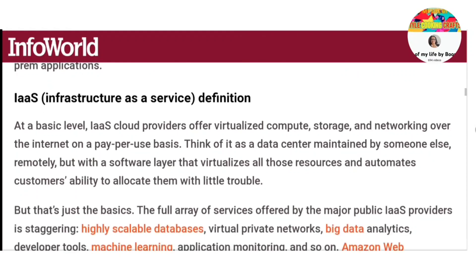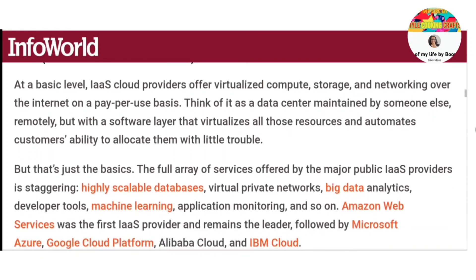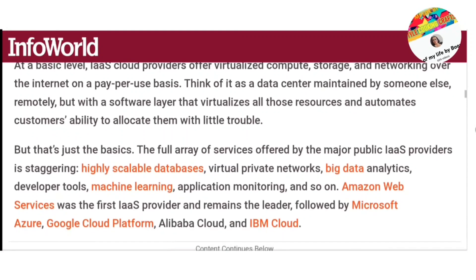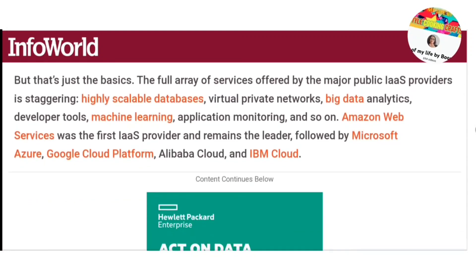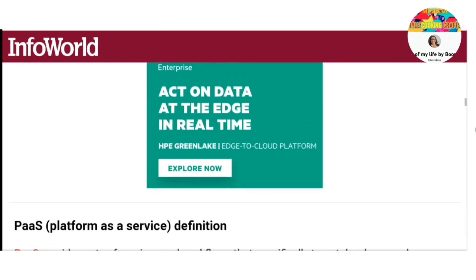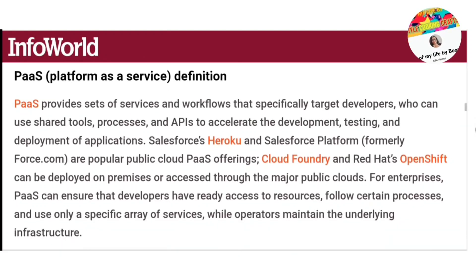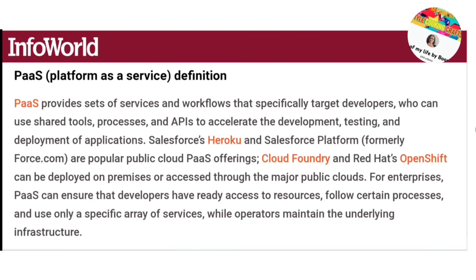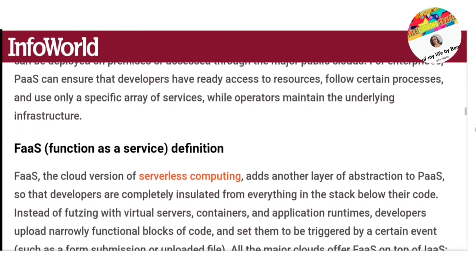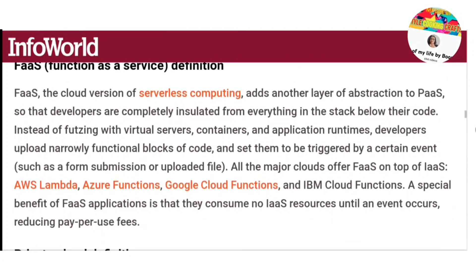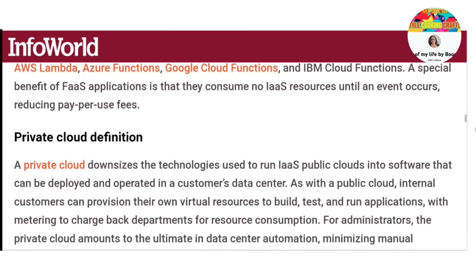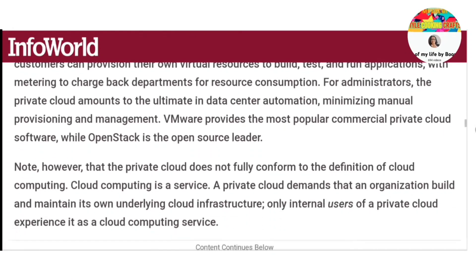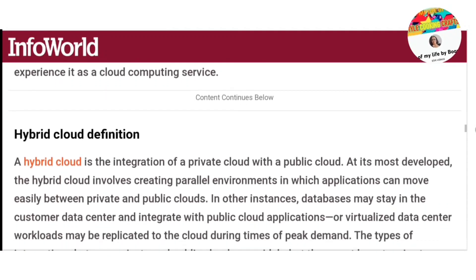Is Gmail a cloud service? Software as a Service (SaaS) allows people to use cloud-based web applications. Email services such as Gmail and Hotmail are examples of cloud-based SaaS services. Cloud storage is a cloud computing model that stores data on the internet through a cloud computing provider who manages and operates data storage as a service. It is delivered on demand with just-in-time capacity and costs, and eliminates buying and managing your own data storage infrastructure.